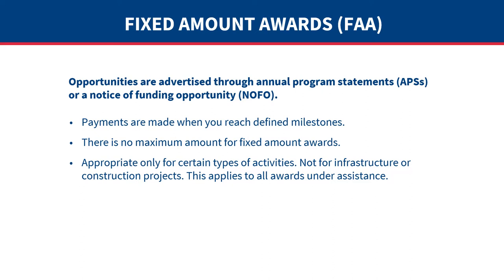The maximum amounts allowed for fixed amount awards have been uncapped — a fixed amount award can be for any amount. Fixed amount awards are appropriate only for certain types of activities, including conferences, studies, surveys, workshops, policy papers, disaster or humanitarian relief, and technical development assistance when costs can be segregated by milestone. Fixed amount awards may not be used for infrastructure or construction projects. USAID aims to use fixed amount awards to strengthen local NGOs and private sector partners with limited or no experience, enabling them to build institutional capacity and improve internal procedures, systems, and policies.